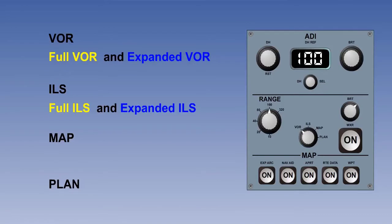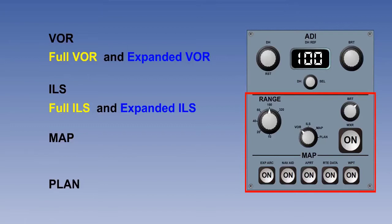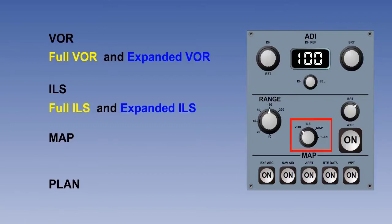The modes are selected using the controls on the EHSI section of the EFIS control panel, which is highlighted here. The control knob in the centre of the EHSI control panel is the principal mode selector.